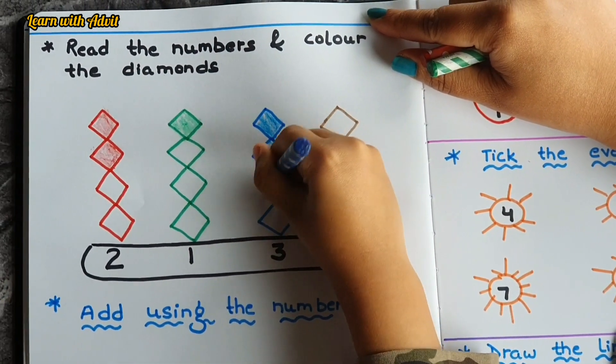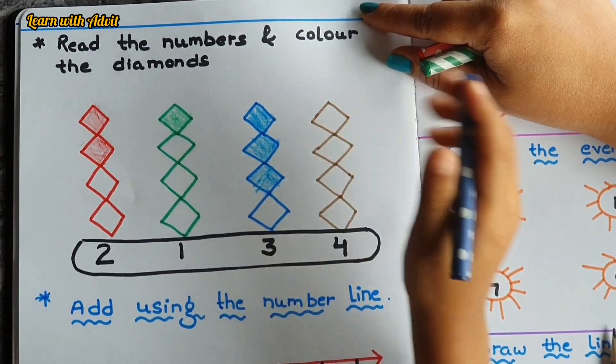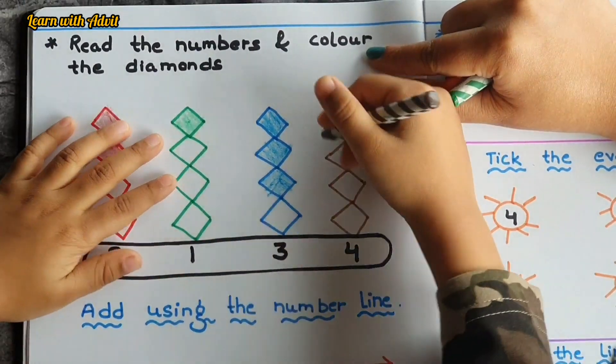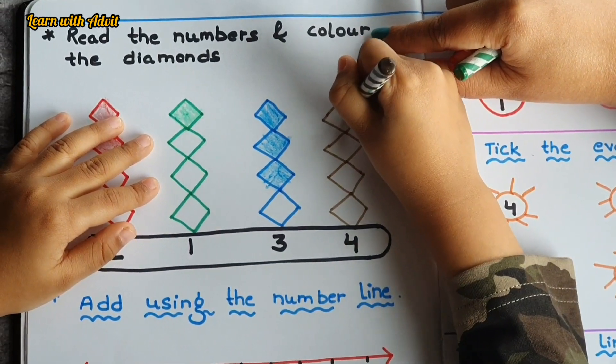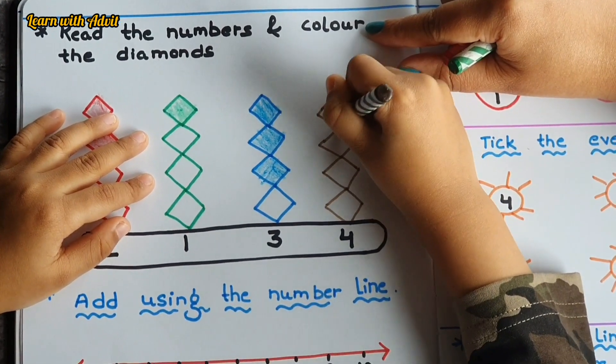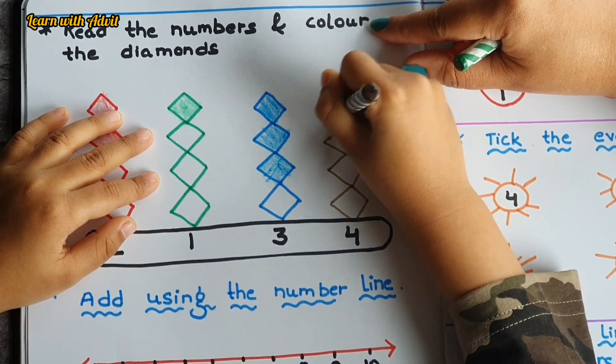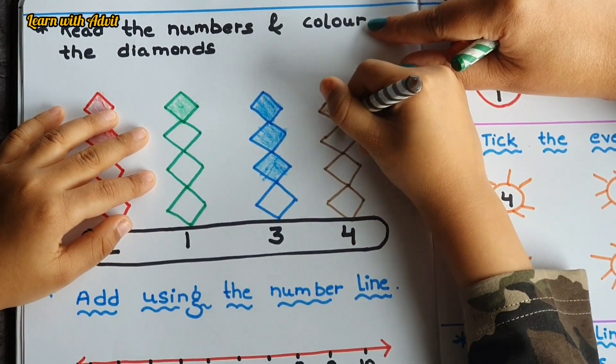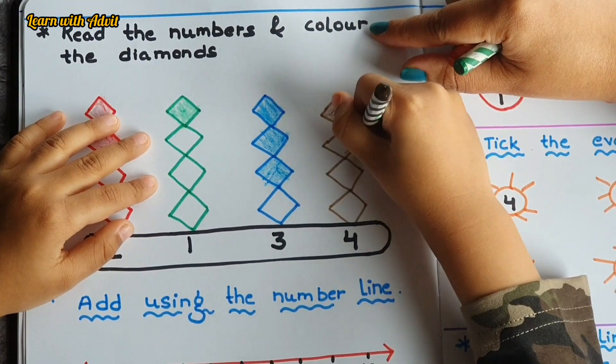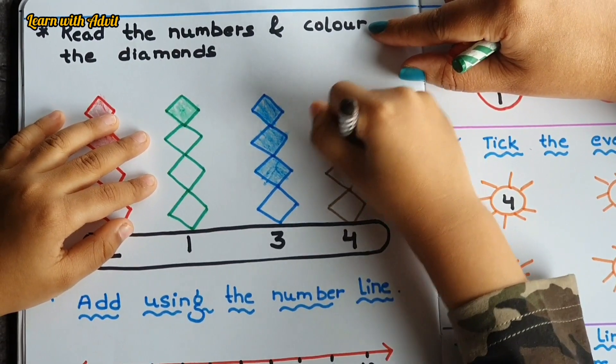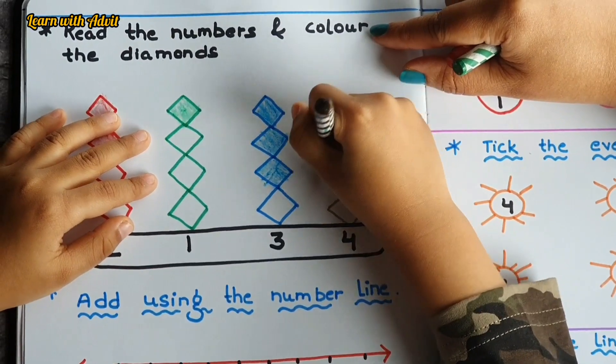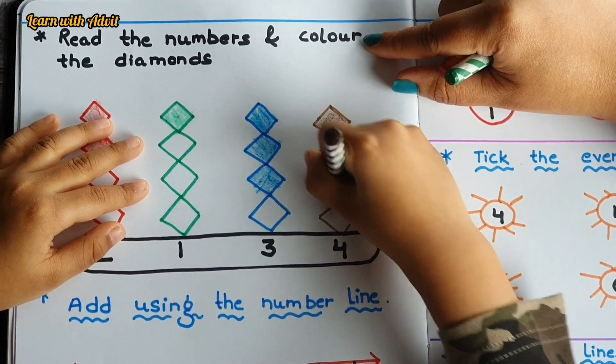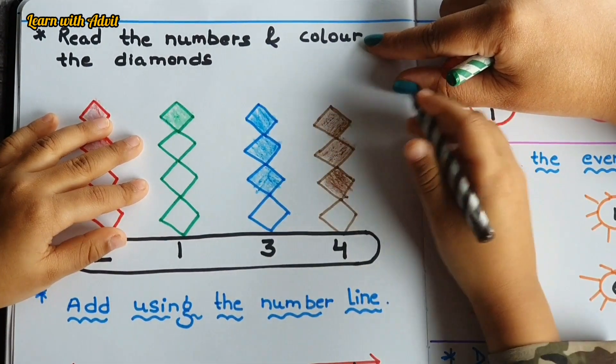So the last number is three. Which number? Four. You have to color all of them because there are only four diamonds. Yes, do it fast. Yes, very fast. Yes. Then third, and the last one is four.